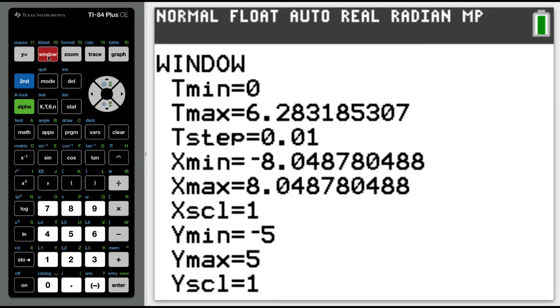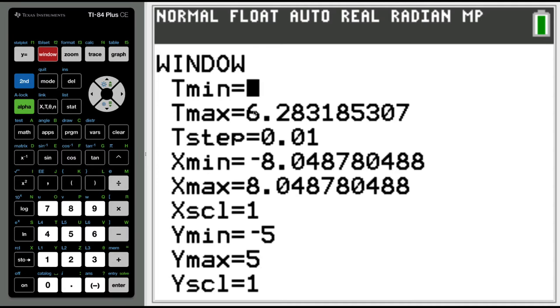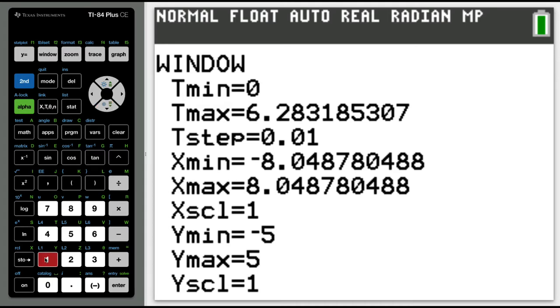I'm going to have to adjust my window just a little bit. We were told that we wanted our t values to go between 0 and 1. So my t minimum I'm going to set at 0, my t maximum I'm going to set at 1, and then I'm going to hit graph.